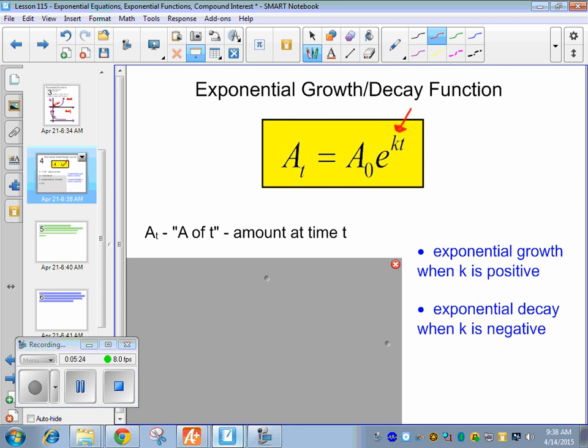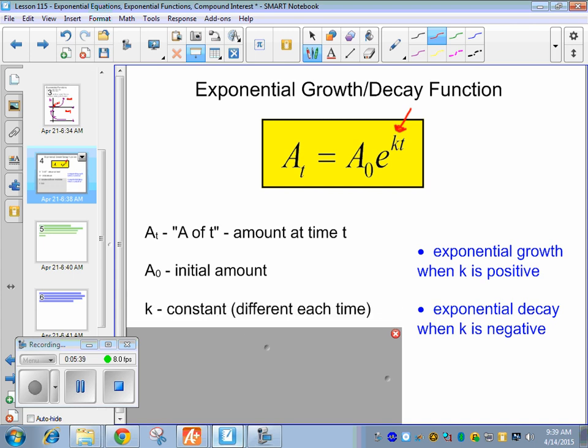So a of t is the amount that you have at time t. So what's your answer? After five years, there's 30 million rabbits. So a t would be 30 million rabbits. So a sub 0 is the initial amount. So maybe we started with three rabbits. K is a constant. It's different each time. And then t is the time. So after five years, however many rabbits.